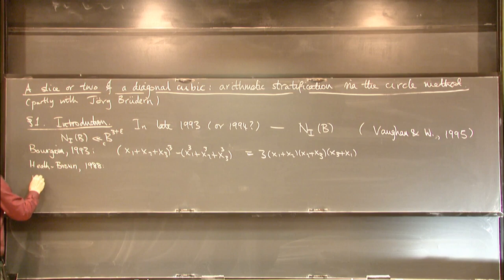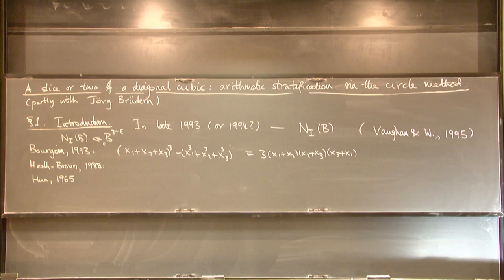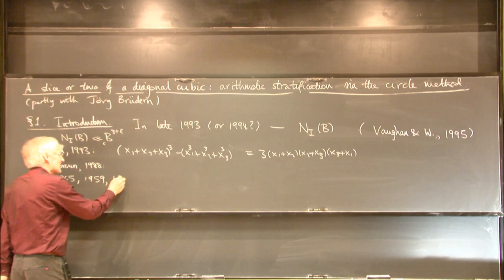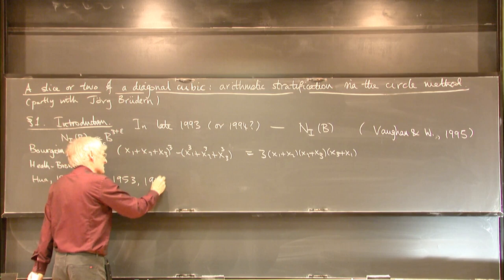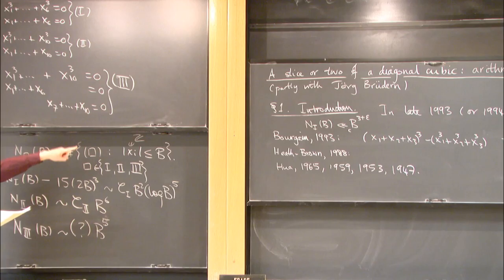If Bourgain had read the recent literature, he would have discovered that Heath-Brown had come up with exactly the same idea and proved the same bound in 1988. And if Heath-Brown had read the literature, he would have noticed this book by Hua — standard reading for circle method students — which does exactly the same thing. The English translation of the German edition of 1959, itself of the Chinese edition of 1953 and the Russian edition of 1947. The message: it is good to read the literature.